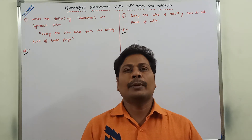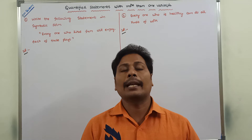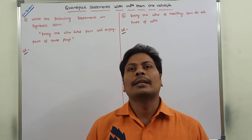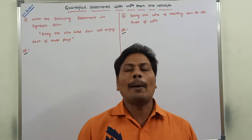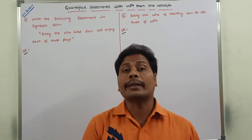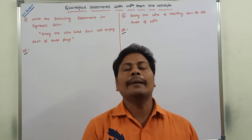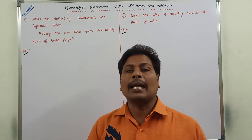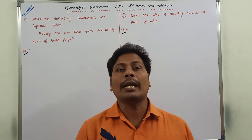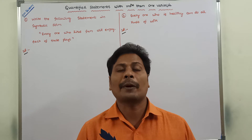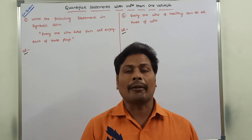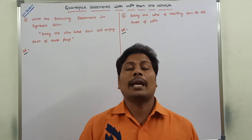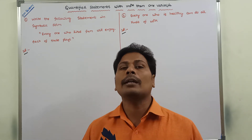Hi friends. Today I am giving a lecture on how we represent a given statement in symbolic form whenever it contains more than one quantifier and more than one variable. It is somewhat critical when compared to the previous symbolic representation in propositional logic and predicate logic. We will see two example problems in this video.